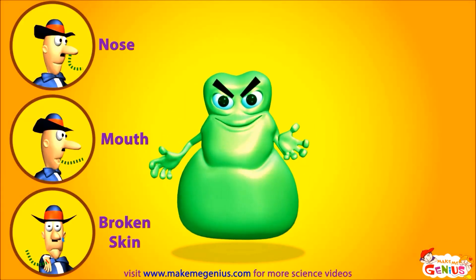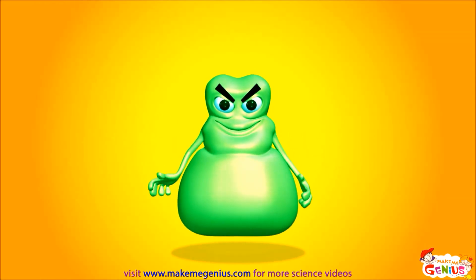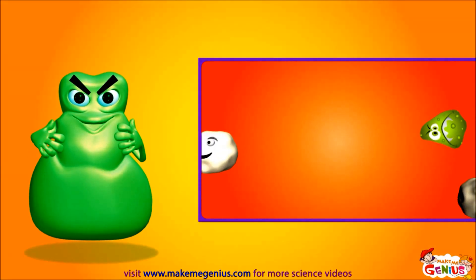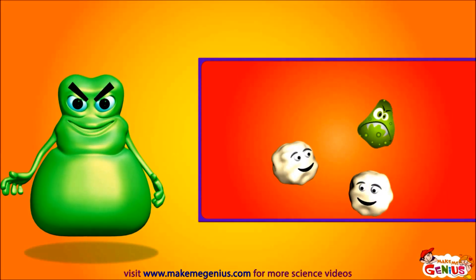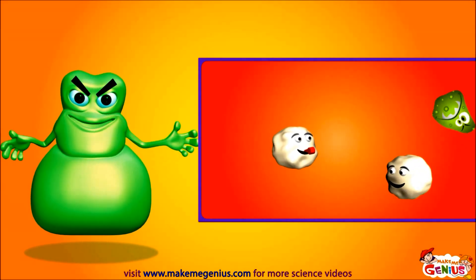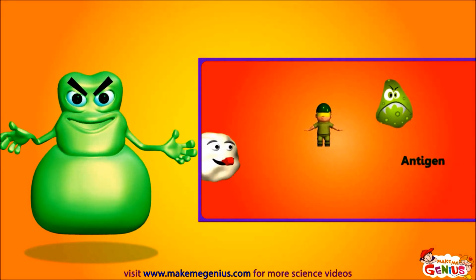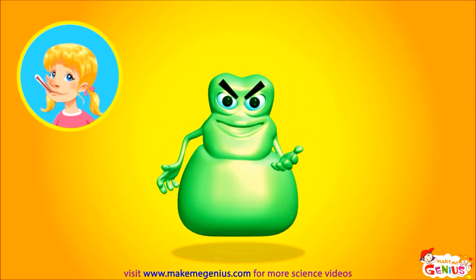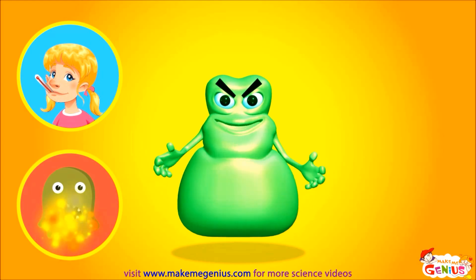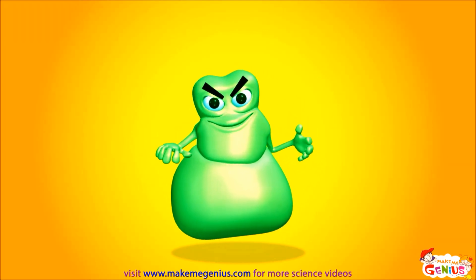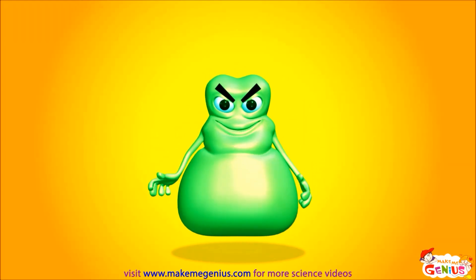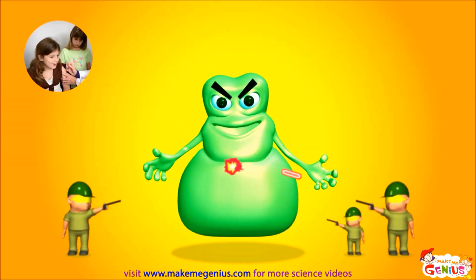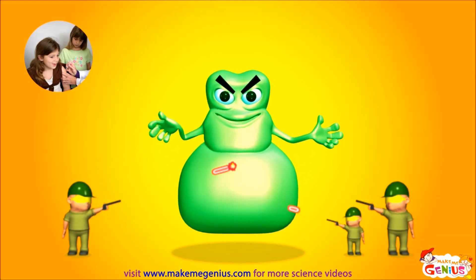Bacteria can enter your body through your nose, mouth, or from broken skin. We can't make you sick every time we enter your body. Your immune system has white blood cells — they are police for guarding your body against us. Once they find or see a bad bacteria, they whistle and they name us antigens. Then they send antibodies to kill us. Sometimes you get a fever. Your body temperature goes up and enemy bacteria are killed due to high temperature. So fever protects you from bacterial infections. You can also get vaccinated — vaccines produce lots of antibodies in your body, and these antibodies help your immune system to kill bad bacteria.